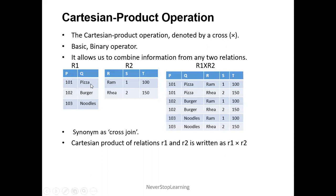So row 101 from r1 combines with both rows of r2, similarly row 102 and row 103 each combine with all rows of r2. Each tuple of r1 merges with each tuple of r2. That is the work of Cartesian product — it allows us to combine information from any two relations. It is also known as cross join or cross product.